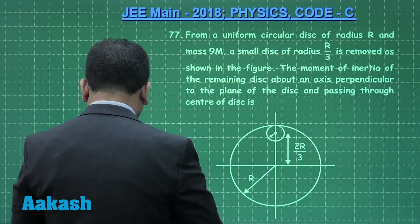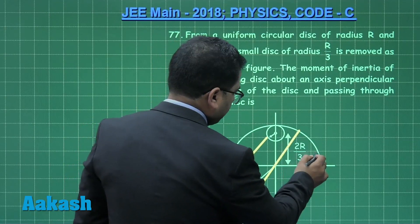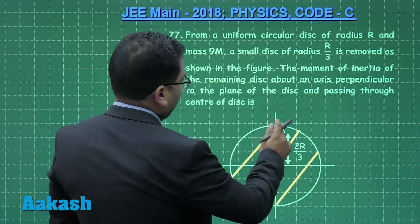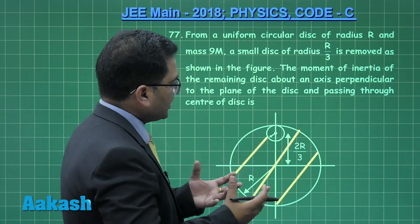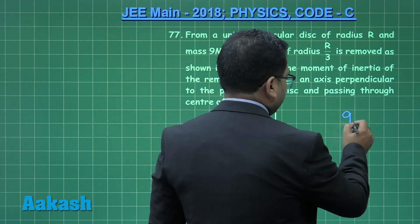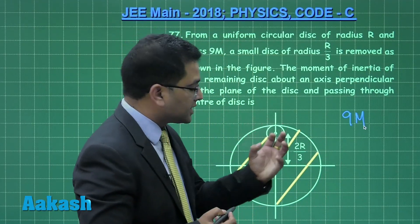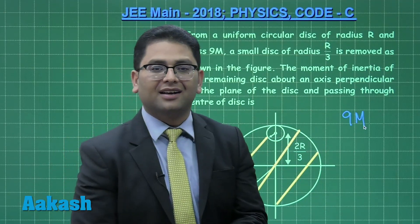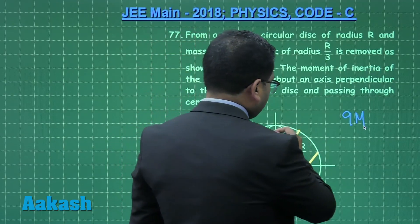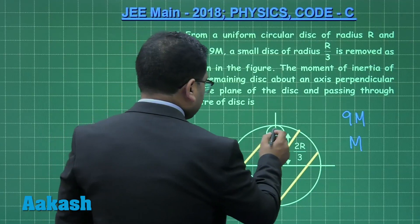We have made a cavity in the disc. The cavity has a radius of R/3. Since mass is distributed over area and the area of the removed disc is 1/9th of the total, the mass of the removed part is m.